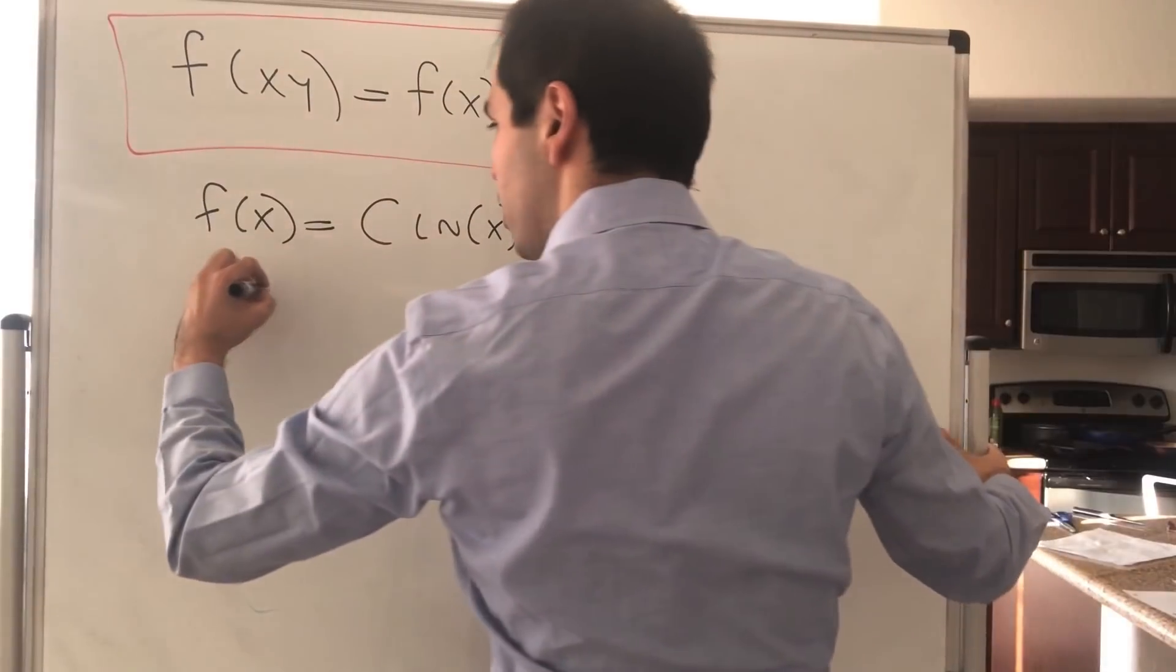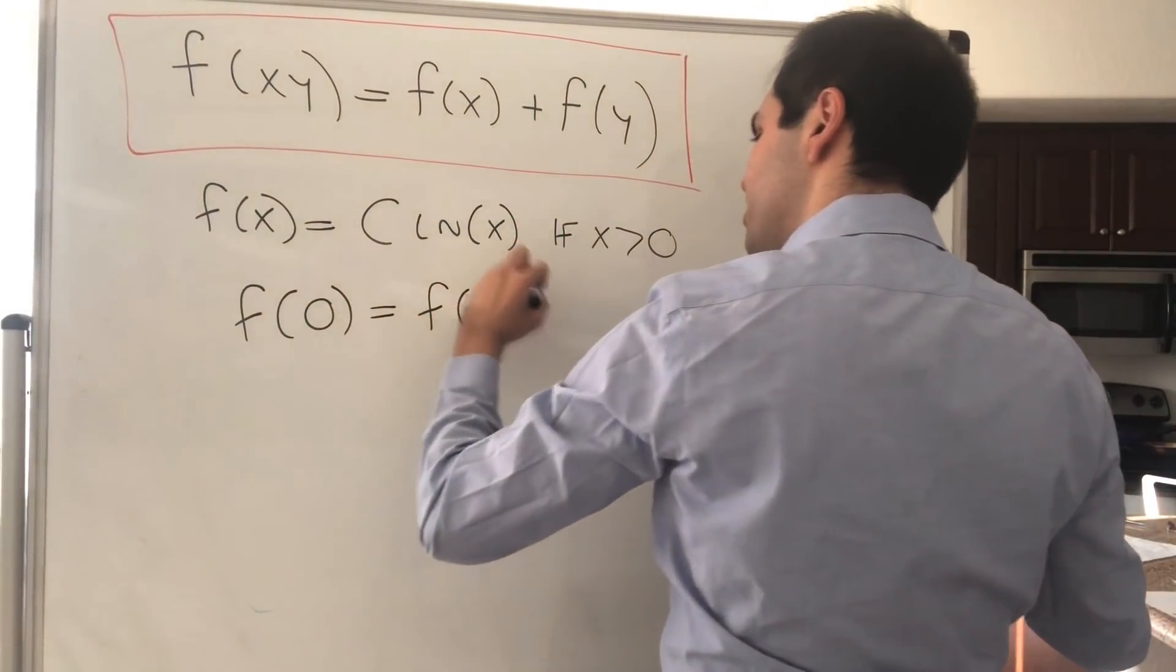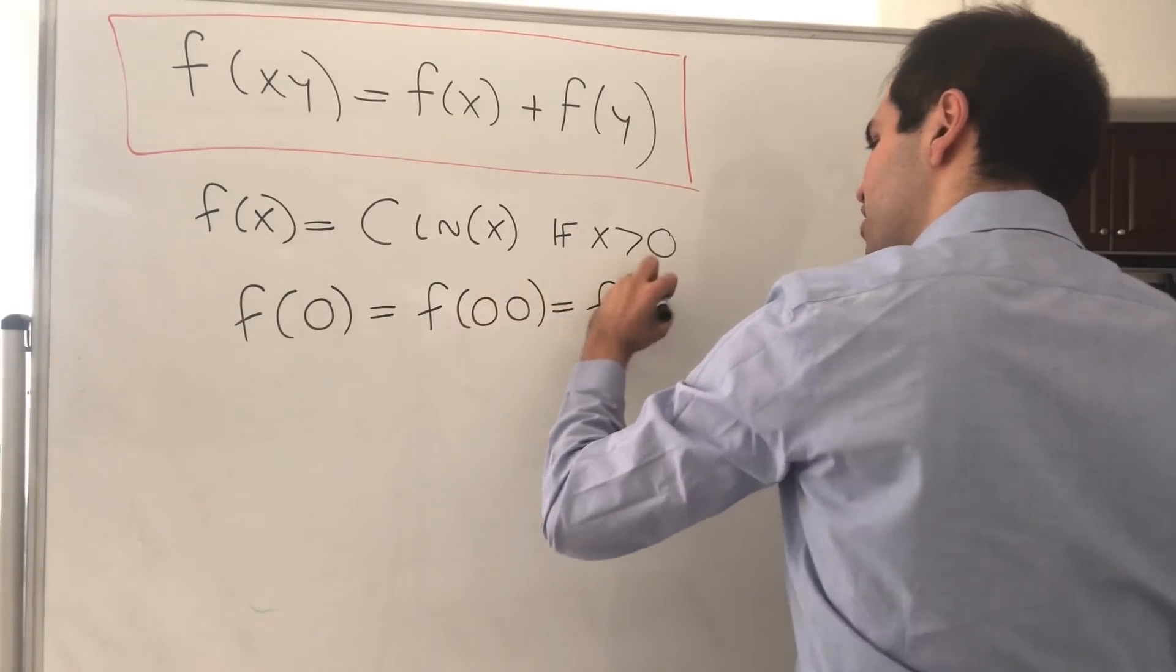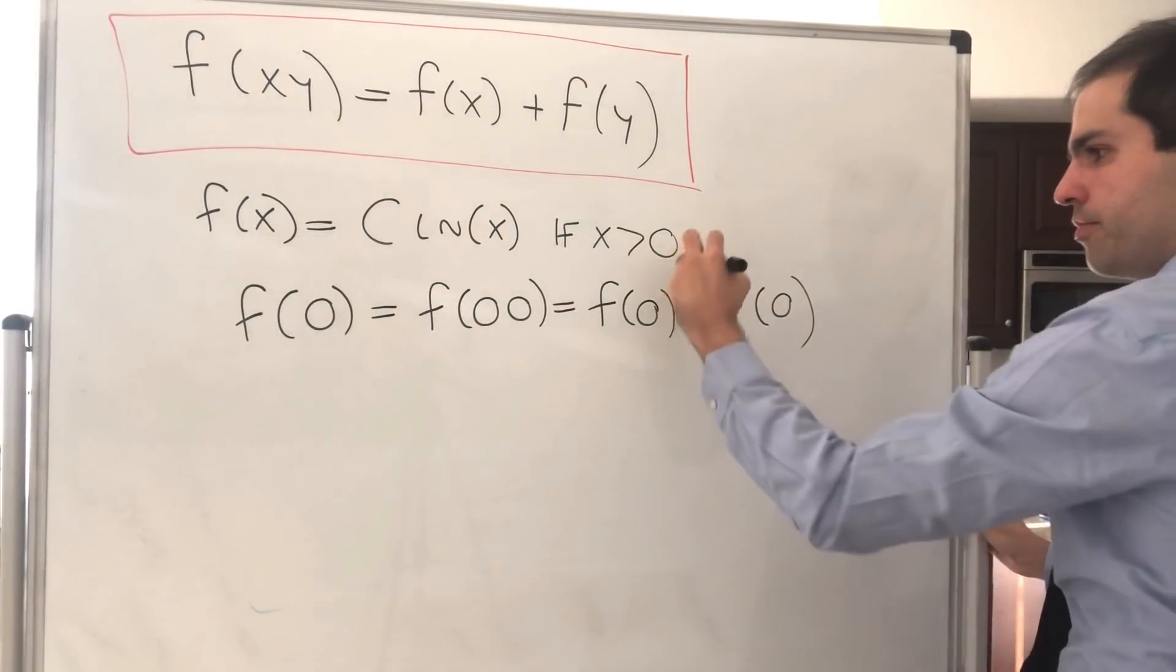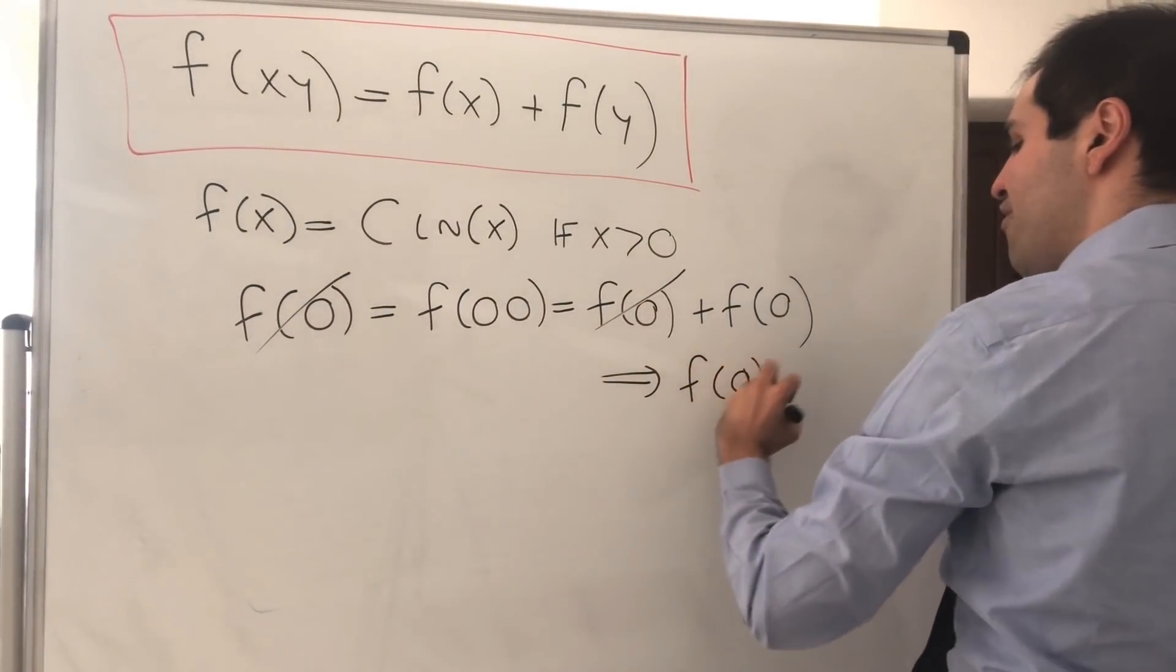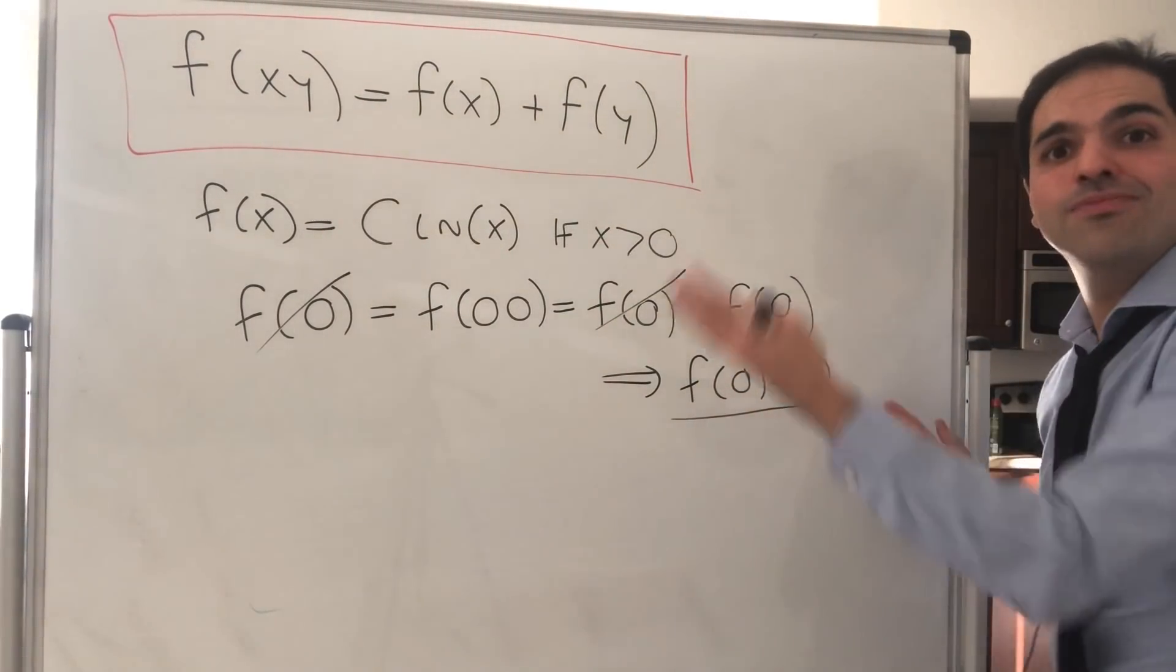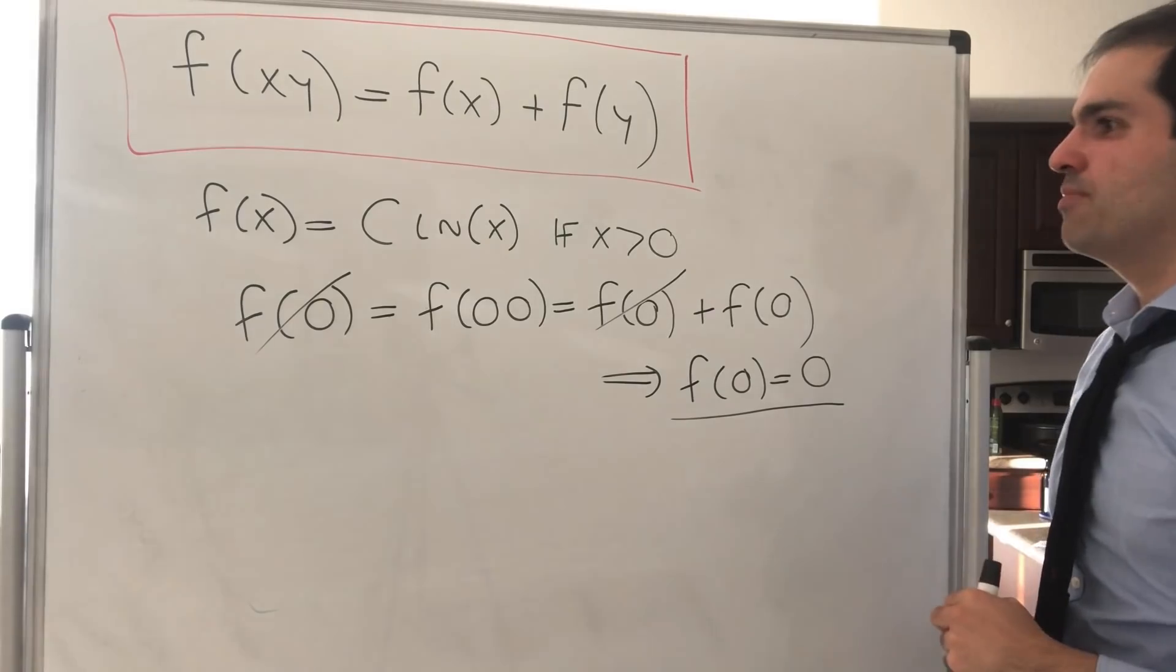So at 0, this is not too bad, because f of 0, that is f of 0 times 0, and that's f of 0 plus f of 0. And this cancels out. And in the end, we get that f of 0 has to be 0. And again, it doesn't make it continuous, but I think at this point it's all right.